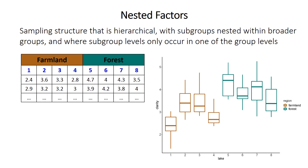Importantly, what makes this nested is that the items — the lakes — occur in only one of the broader group levels. Lakes one through four occur in farmland; lakes five through eight occur only in forest. You don't have one lake in both types.